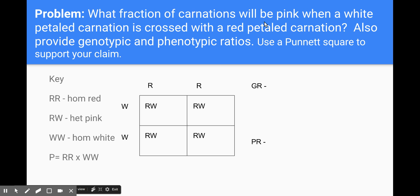What fraction of carnations will be pink when a white petaled carnation is crossed with a red petaled carnation. Incomplete dominance, this inheritance pattern results in three phenotypes in the offspring as opposed to two phenotypes present in the offspring. We might not necessarily always have the three phenotypes but there's the potential for the three different phenotypes.